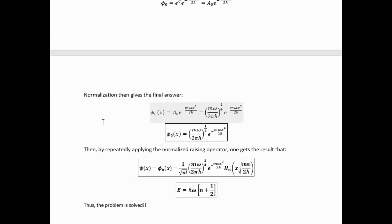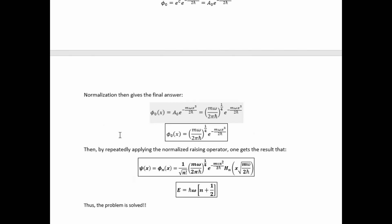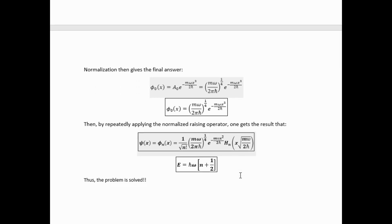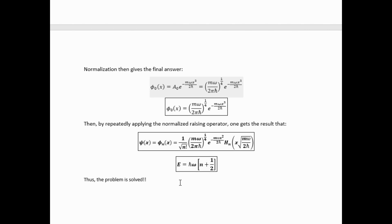Then repeatedly acting on this with that normalized raising operator in position space, we arrive at this final result. Specifically what happens is repeatedly differentiating this factor yields the same Gaussian times polynomials. And those polynomials end up just being the Hermite polynomials, specifically with this argument. So then this is the complete solution to the Schrödinger equation for the quantum harmonic oscillator derived via the operator method along with the associated eigenvalues.